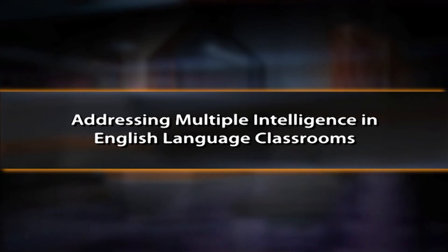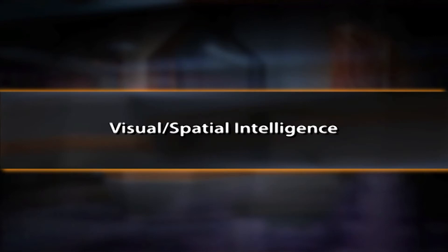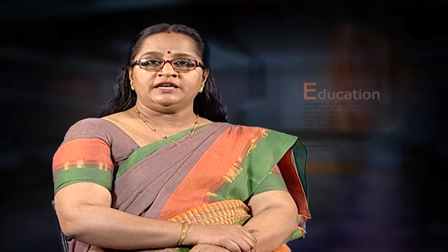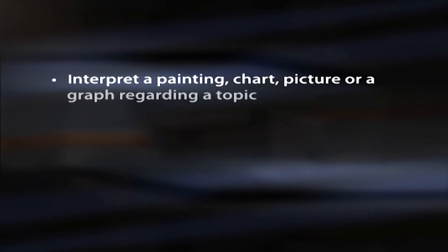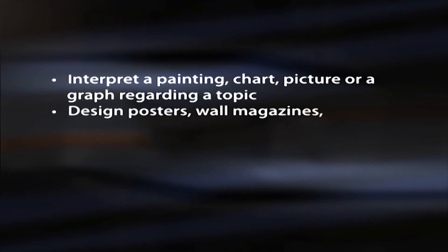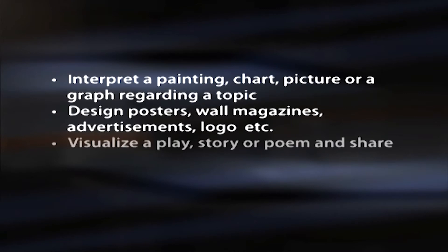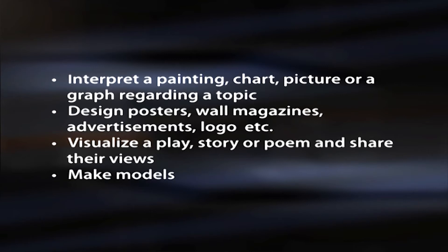Addressing multiple intelligences in English language classrooms — Visual-spatial intelligence: The use of visual, spatial and situational clues is the most effective way to learn a language. Visual clues help learners remember language. In classrooms, to promote visual-spatial intelligence, situations can be provided to interpret a painting, chart, picture or graph regarding a topic; design posters, wall magazines, advertisements and logos; visualize a play, story or poem and share views; and make models.